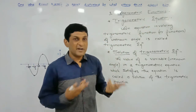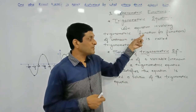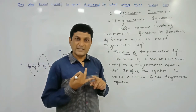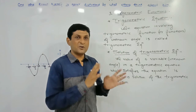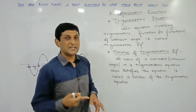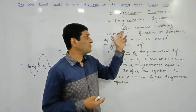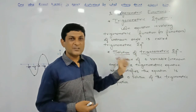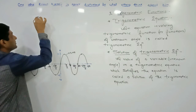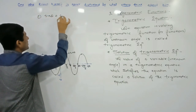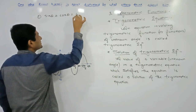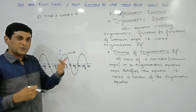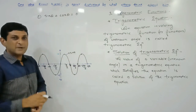Here we are studying trigonometric equations. Our definition says that an equation involving trigonometric functions — there are six trigonometric functions: sine, cos, tan, cot, sec, and cosec — if at least one trigonometric function appears in the equation, then that equation is called a trigonometric equation. For example, sine θ plus cos θ equals zero has two trigonometric functions appearing in it.